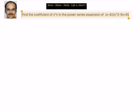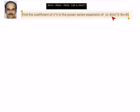Find the coefficient of x power n in the power series expansion of x minus 4 divided by x squared minus 5x plus 6.